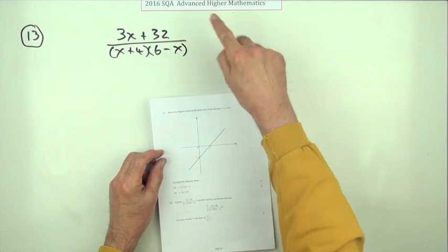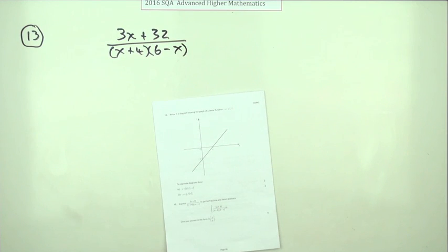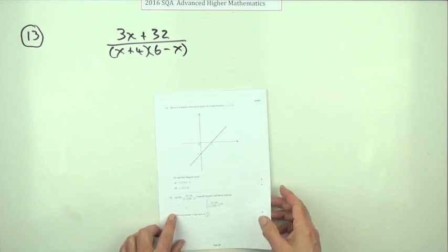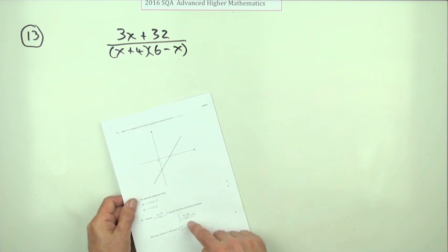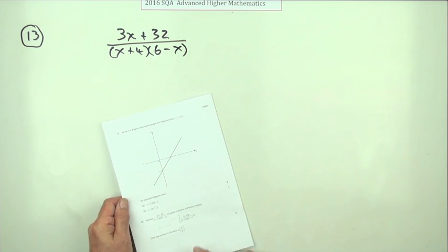Right, number 13 then from the 2016 Advanced Higher Maths. Nine marks, the first of the big guns at the end. Here we go, partial fractions leading to evaluating an integral.